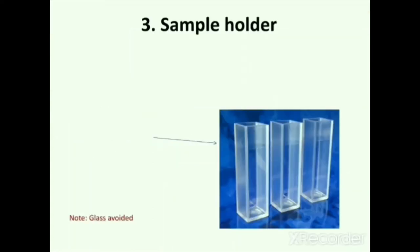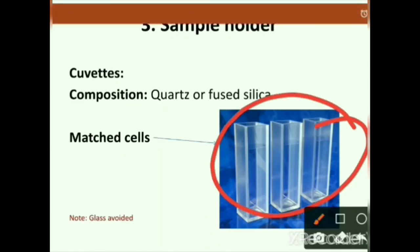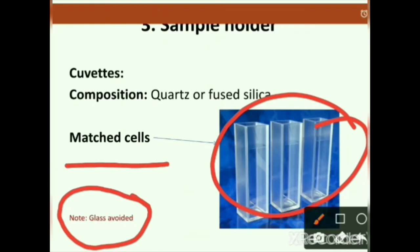The sample holder uses cuvettes made of quartz or fused silica. In the spectrophotometer, matched cells are used — these are cells of exactly the same composition. Glass is avoided in cuvettes because it absorbs electromagnetic radiation.